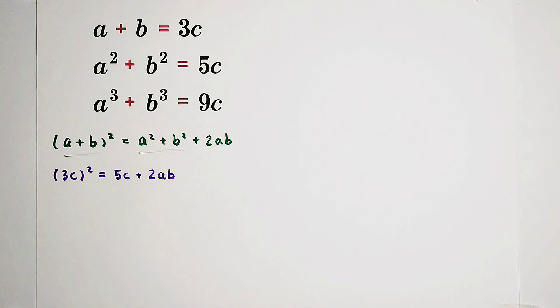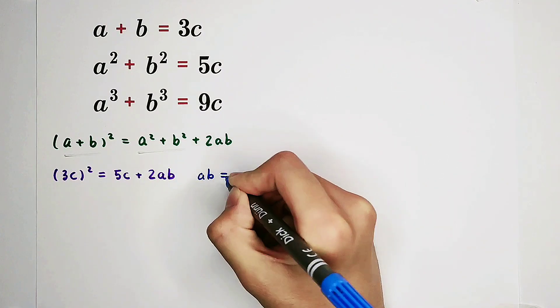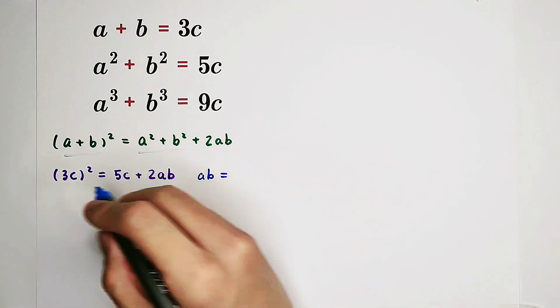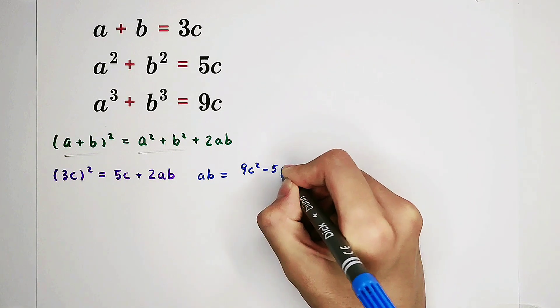So now, we can express a times b with a term about c. a times b is 9c squared minus 5c, then over 2.